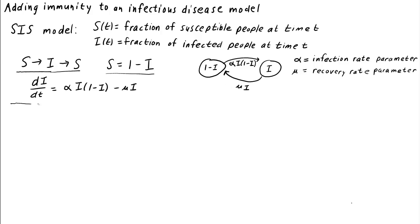In some diseases, however, after individuals recover from infection, they become immune to the disease. Susceptible individuals become infected as before, but when they recover, they don't go back to the susceptible pool.